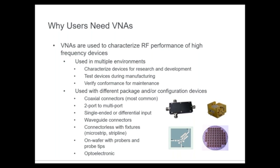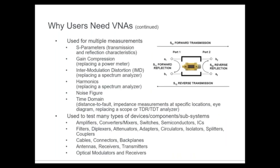We have various methods to transfer the reference plane of our measurement to where we want it, so we're measuring just the device. Most commonly we have coaxial devices — two-port, multi-port, differential inputs, single-ended, waveguide devices, fixtures, probe stations for semiconductor wafers, and even optoelectronic cross-domain measurements like E-to-O and O-to-E, measuring optical modulators, receivers, and transceivers using an electrical VNA. The basic measurements are S-parameters: forward and reverse transmission, forward and reverse reflection — those are your four S-parameters for the two-port case.